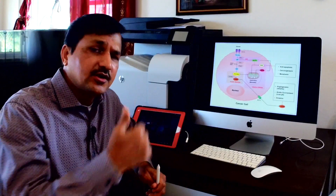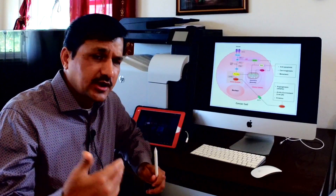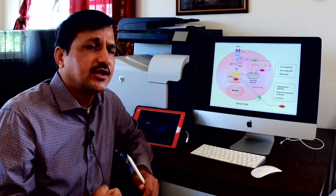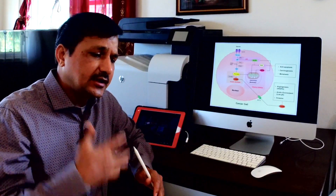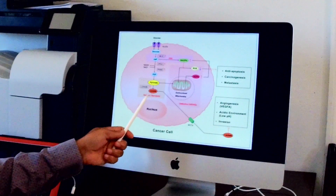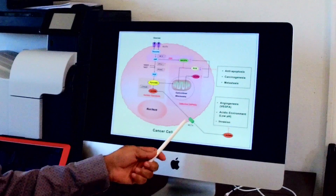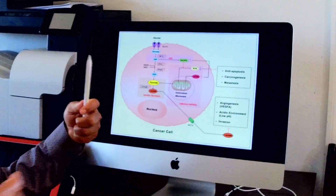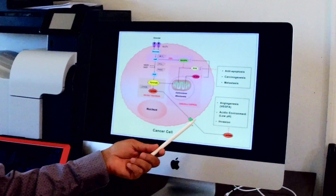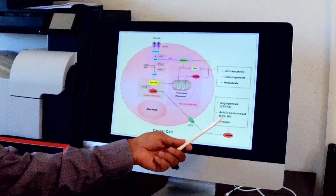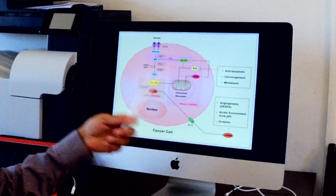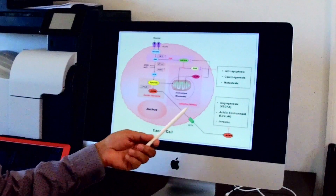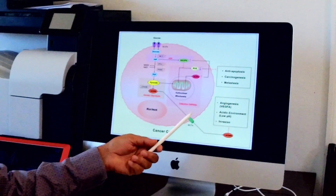In cancer cells, glucose is converted into pyruvate, and pyruvate rather than going into acetyl-CoA is diverted into lactate formation. One reason postulated by Warburg is mitochondrial dysfunction. Because of this, pyruvate is converted to lactate, and lactate exits the cancer cell via monocarboxylate acid transporters into the extracellular matrix. This causes an acidic pH in the extracellular matrix, which attracts vascular endothelial growth factor, contributing to angiogenesis, invasion, and metastasis.